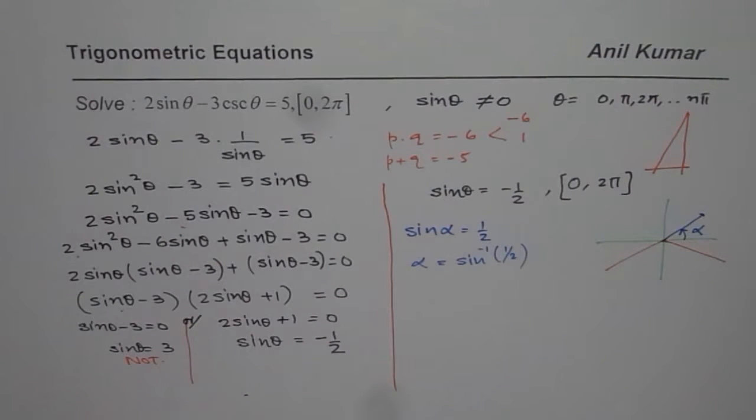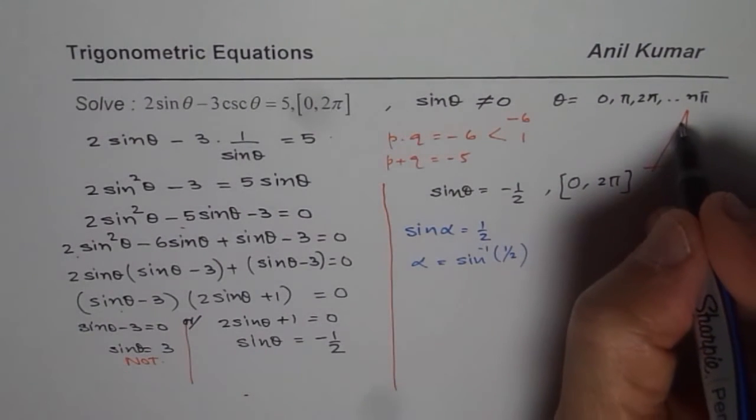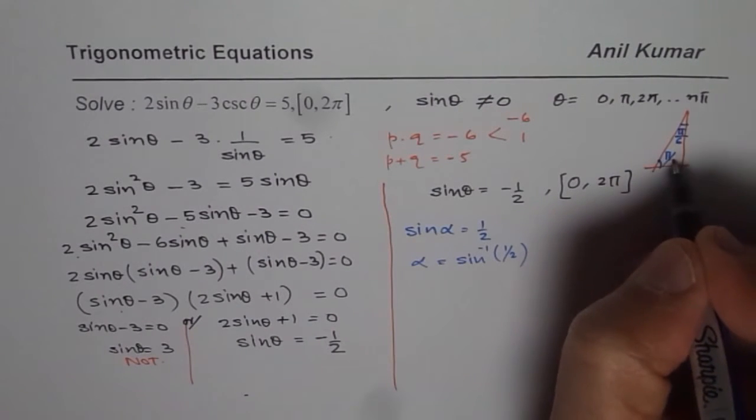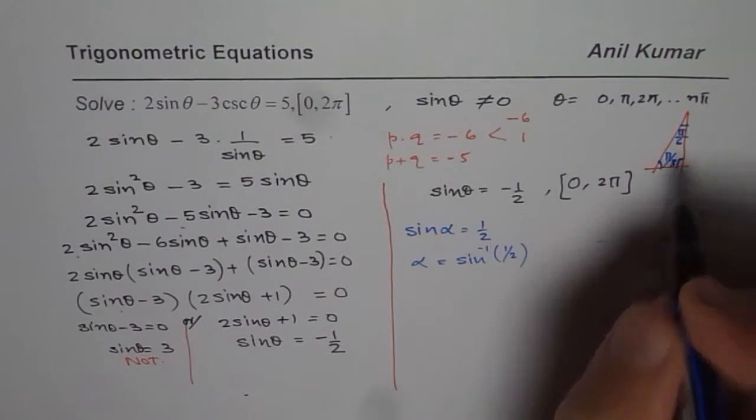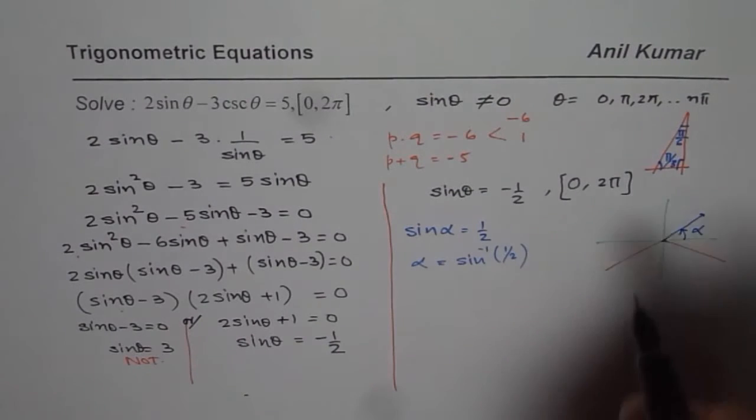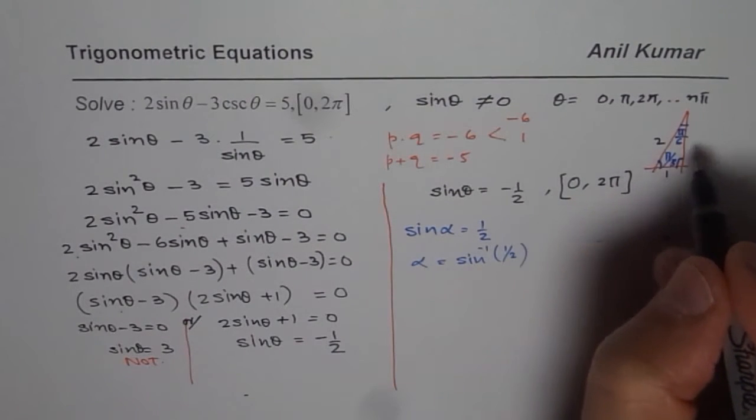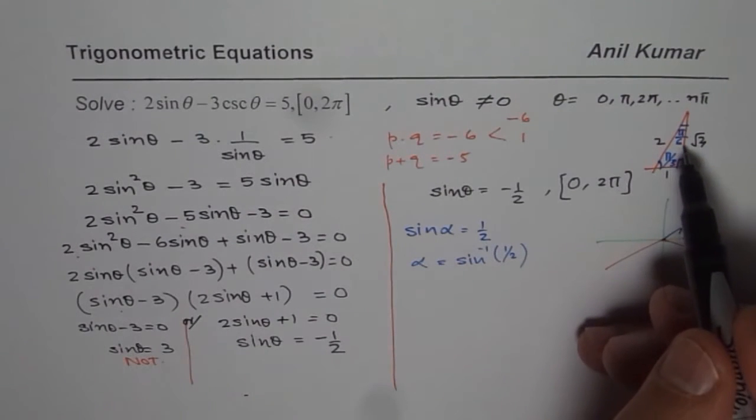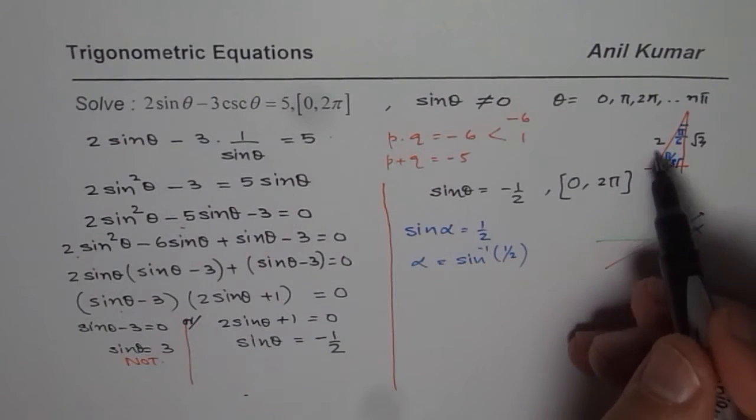I hope you remember. 30, 60, 90 or pi by 3, pi by 6 and pi by 2. So this triangle. So in this particular pi by 3, pi by 6 triangle, you know the side ratios are 1, 2 and square root of 3. So sin pi by 6 is half. So we get alpha equals to pi by 6.